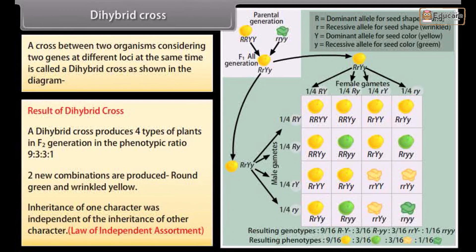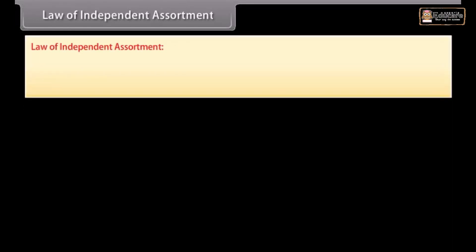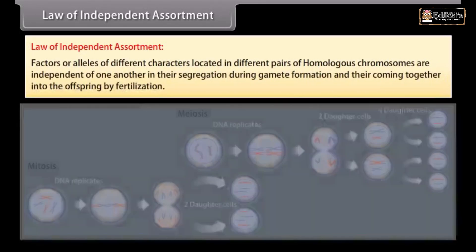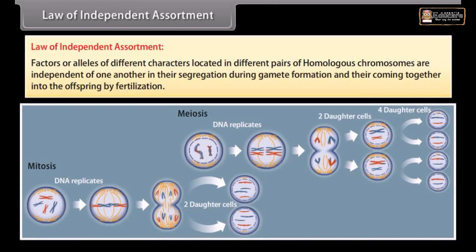Inheritance of one character was independent of the inheritance of other character. Law of independent assortment: Factors or alleles of different characters located in different pairs of homologous chromosomes are independent of one another in their segregation during gamete formation and they're coming together into the offspring by fertilization.